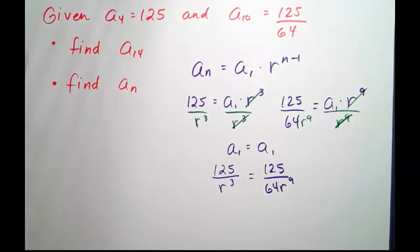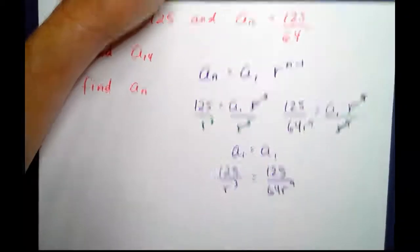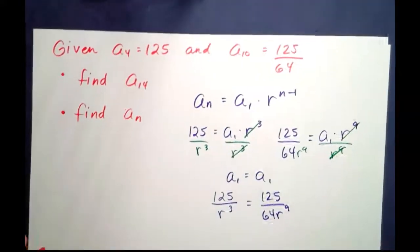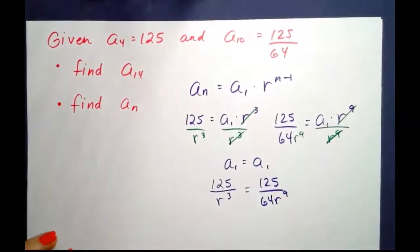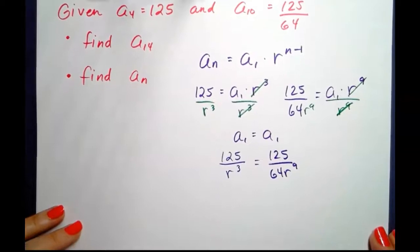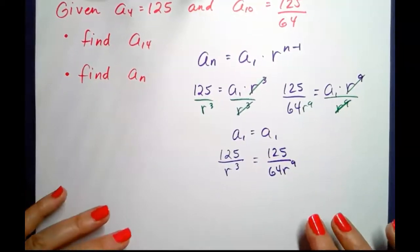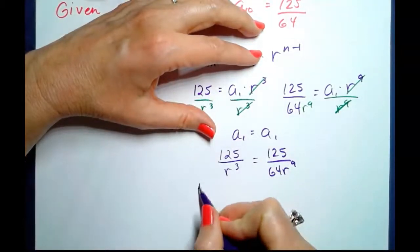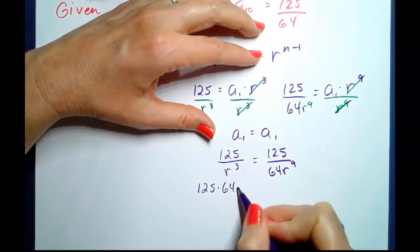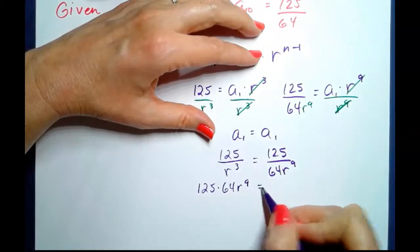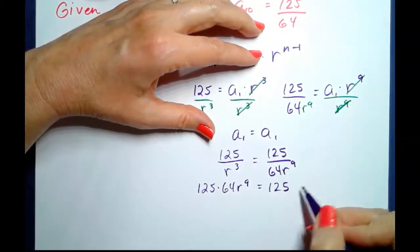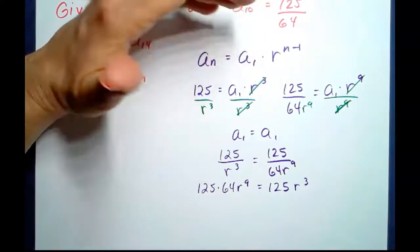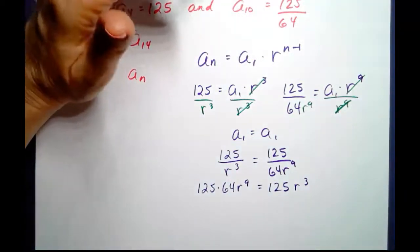Let's do that by cross multiplying, but don't multiply the numbers together. Leave everything factored. So here is 125 times 64 r to the ninth equals 125 r to the third. Set the cross products equal to each other.